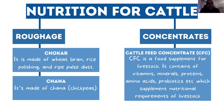Cattle produce milk which is high in protein, so a large amount of protein has to be supplemented in their diet. We often feed them grains like chana, which has high protein and allows them to produce milk. You also have what are called concentrates - things we buy from the market.